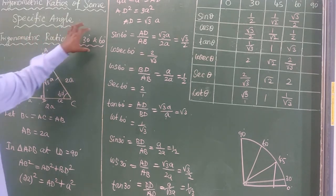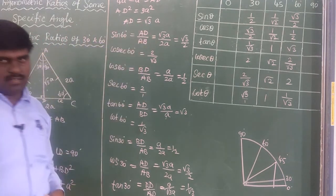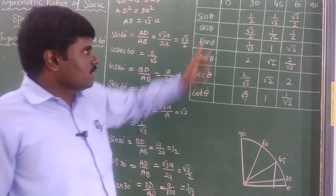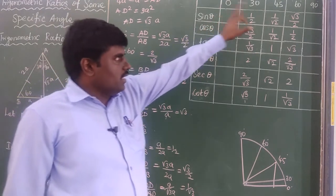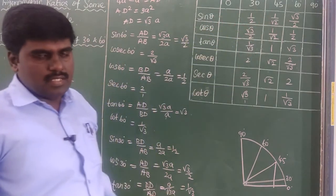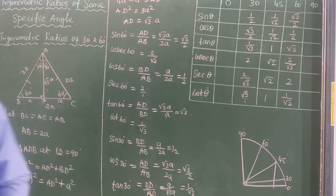These are the six trigonometric ratios for 30° and 60°. Next we will see the values for 0° and 90°.